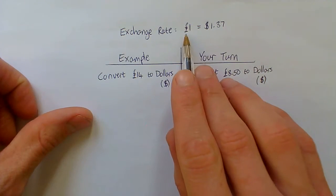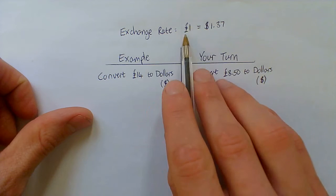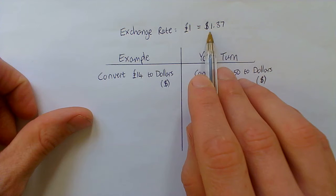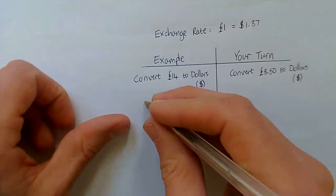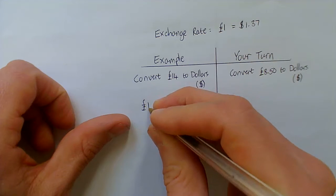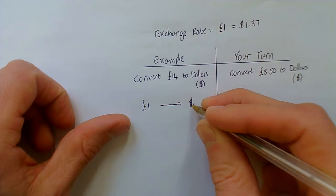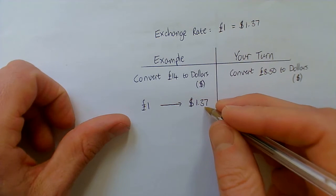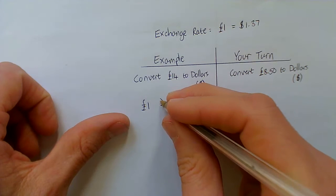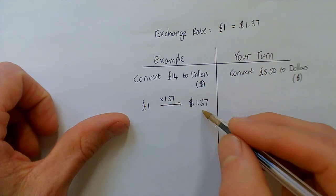So let's use this exchange rate here to do a currency conversion. So if one pound equals $1.37, what would 14 pounds be? Well, here's a handy layout. And I want you to lay this out exactly like this every single time because it will keep you right. So I have that one pound goes to $1.37. Well, what I've done there is I've timesed by 1.37 to go from one to 1.37.